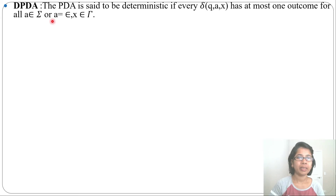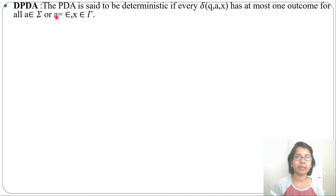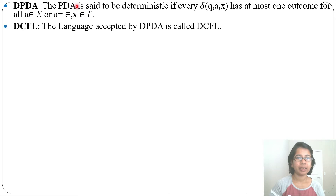Let's discuss DPDA and NPDA. A PDA is said to be deterministic if for every delta(q, a, x) has at most one outcome, for all 'a' belonging to either the input alphabet or 'a' equal to epsilon, and x belonging to some stack symbol. If there is at most one outcome, then this is a DPDA.